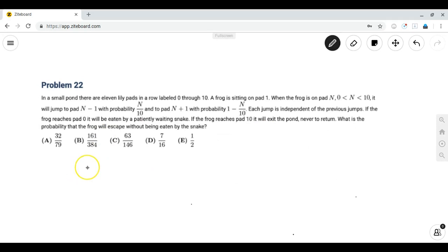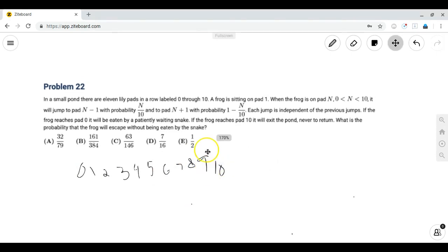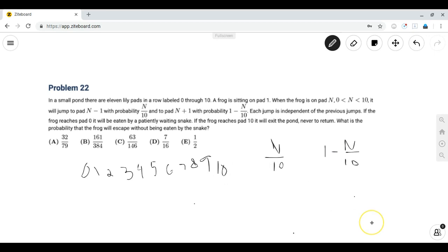Let's write the numbers 0 to 10 and see if we can see something interesting about them. Suppose the frog is at lily pad n. Then it would move to lily pad n minus 1 with probability n over 10 and it will move to n plus 1 with probability 1 minus n over 10.